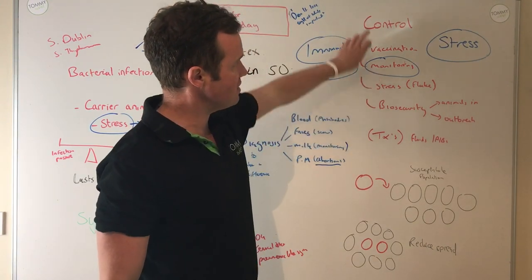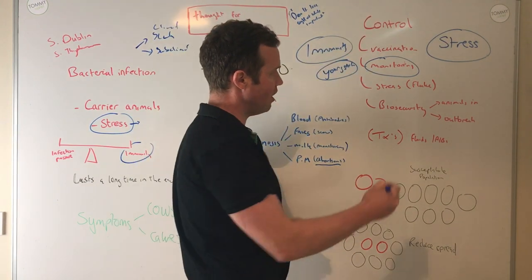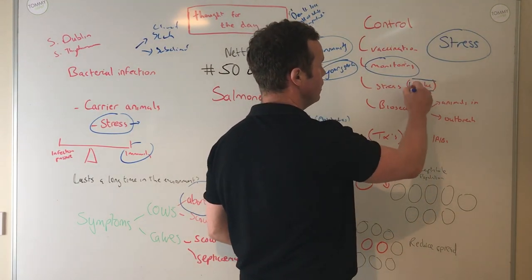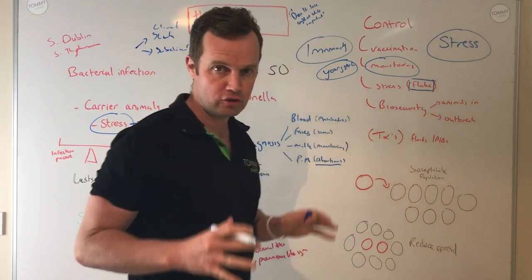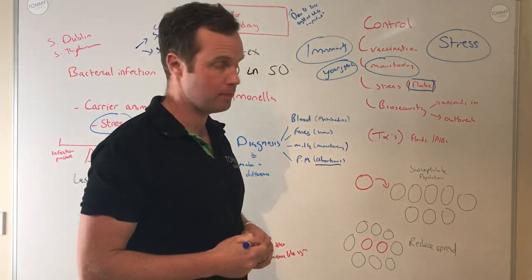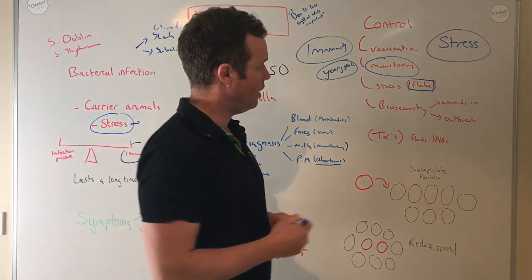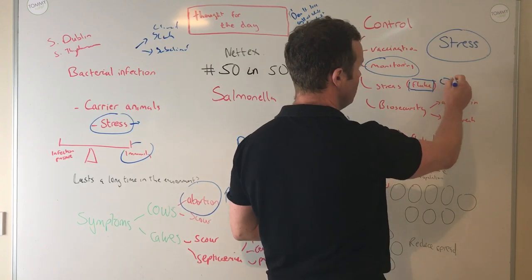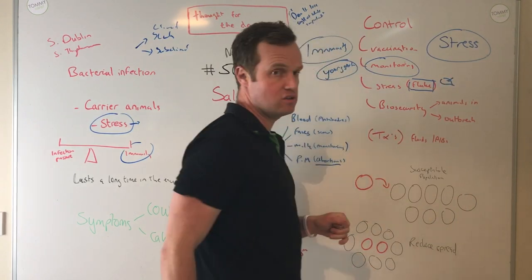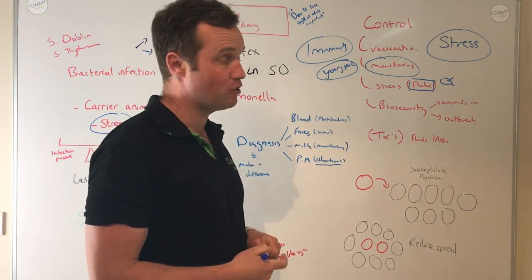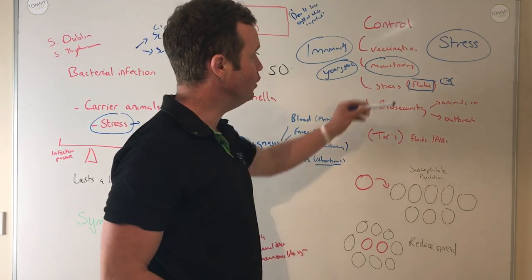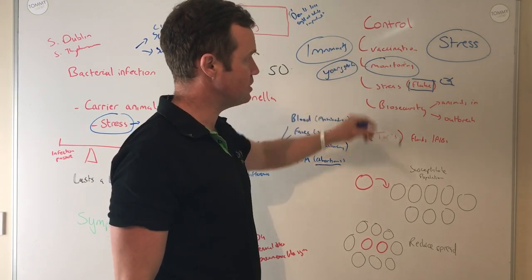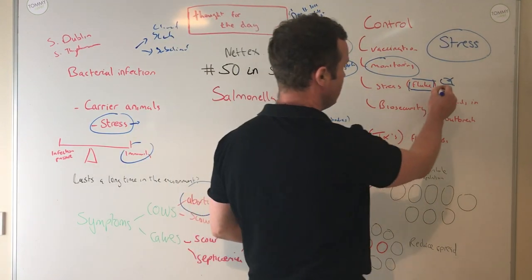One thing we see in Ireland is spikes in Salmonella abortion on farms with liver fluke. Fluke causes immunosuppression through its activity in the liver. A lot of Salmonella can be carried in the gallbladder, which is in the liver, so that could increase the risk with fluke. Fluke and Salmonella together around autumn time seems to increase our risk, so fluke control becomes part of managing Salmonella.